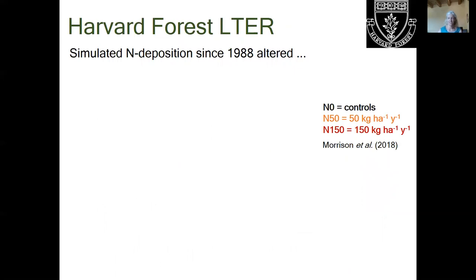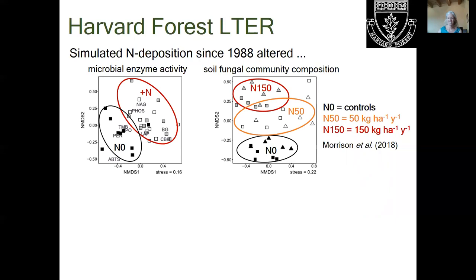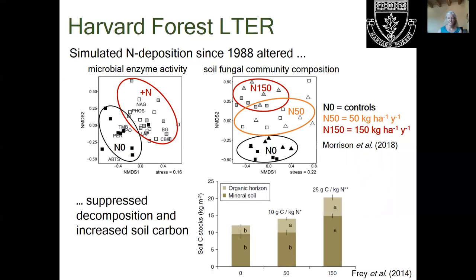In the next story, I'm going to take you across the country to Harvard Forest LTER, where long-term experiments include a simulated nitrogen deposition treatment that has been running since 1988. This experiment includes 50 or 150 kilograms of nitrogen per hectare per year, applied as monthly additions of aqueous ammonium nitrate. Ecological responses to this environmental change included strong changes in microbial extracellular enzyme activity, as well as shifts in the soil fungal community composition. And then, at the ecosystem scale, these community changes suppress the rate of decomposition and increase the carbon pool in soils, as you can see in this graph of soil carbon stocks, which were significantly greater under nitrogen additions.